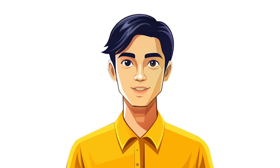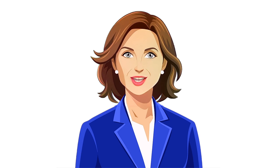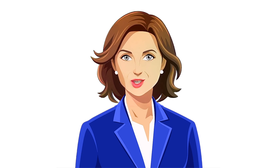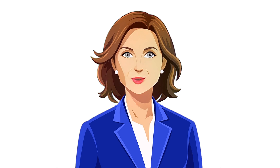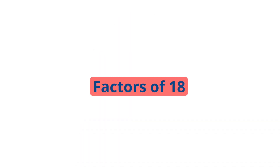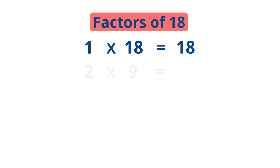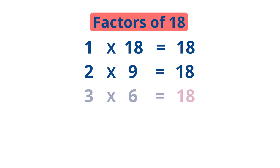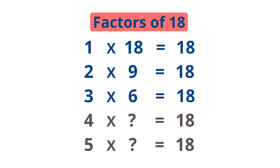How do we find the factors of any given number? It's simple. To find the factors of a number, start by dividing the number by 1 and then continue with each integer up to the number itself. Each time you get a whole number result without a remainder, both the divisor and the quotient are factors. For example, we can find the factors of 18: 1 times 18 equals 18, 2 times 9 equals 18, 3 times 6 equals 18. So the factors of 18 are 1, 2, 3, 6, 9, and 18.